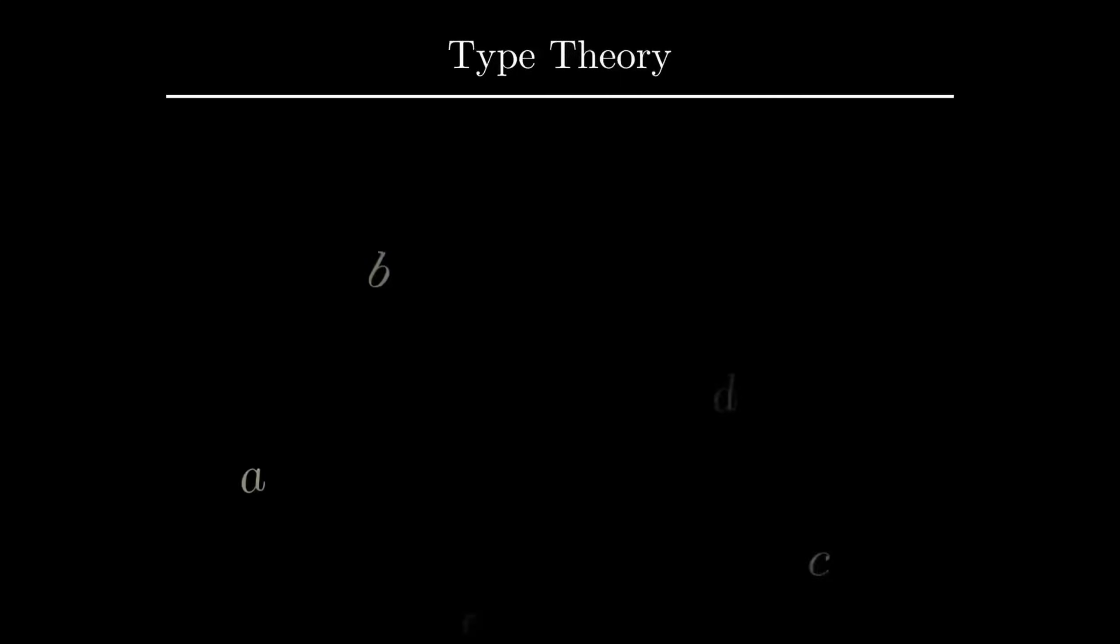In type theory, every object has a type. If you are a programmer, you probably already encountered types, like the boolean type, the string type, or the integer type. Well, that's the same in type theory. If you are not, you just have to know that we group objects of the same kind under a type.